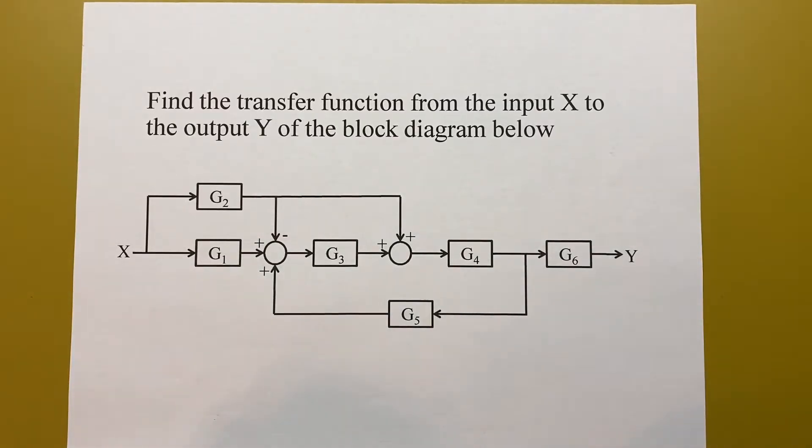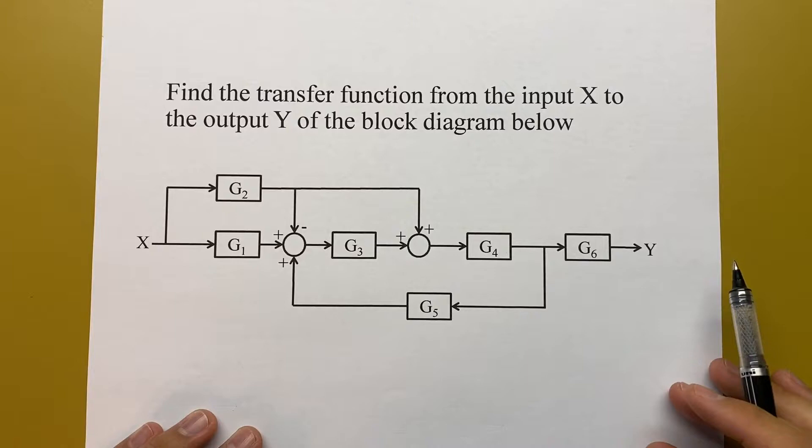This is for if you don't like doing block diagram reduction because there's too much redrawing, or you want to check your work when you do block diagram reduction. I call this the direct algebraic method, and it's just a matter of figuring out what each signal is and then putting it all together to find our transfer function.